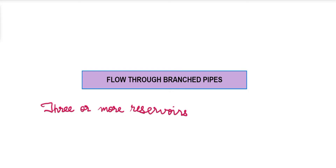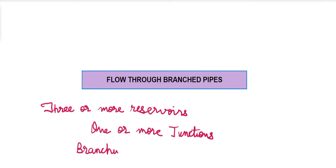And there will be one or more junctions. That type of system we call the branching pipe system, where we have three or more reservoirs connected using pipes with one or more junctions. Such a system we call a branching pipe system.